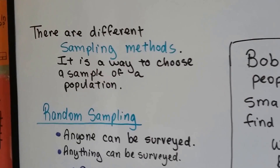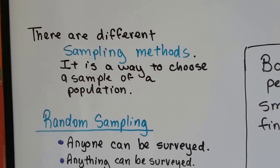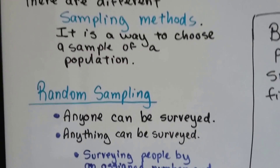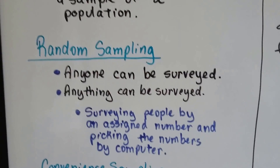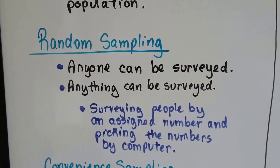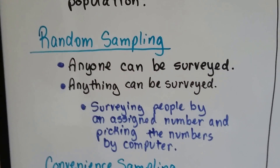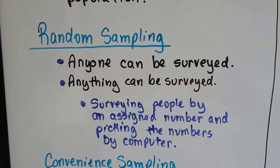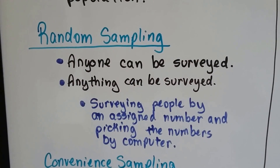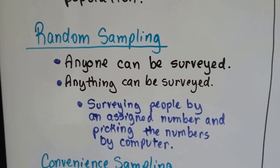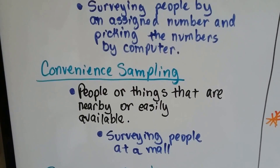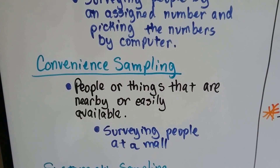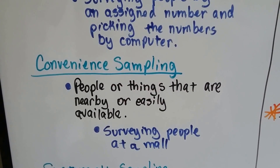There are different sampling methods — a way to choose a sample of a population. We have random sampling, where anyone or anything can be surveyed. It would be like surveying people by an assigned number and then picking the numbers by computer — that would be random.